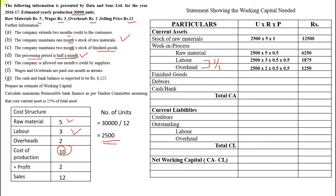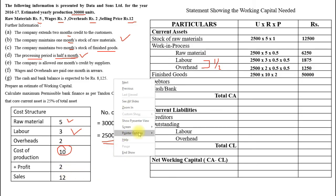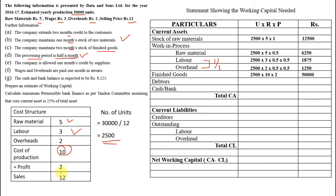Finished goods: 2,500 × 10 (cost of production) × 2 months = 50,000. Debtors: 2,500 × 12 (selling price) × 2 months = 60,000. Cash given is 8,125. Adding all current asset items, the total current assets = 1,40,000.